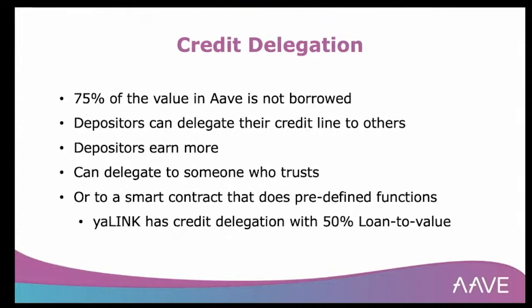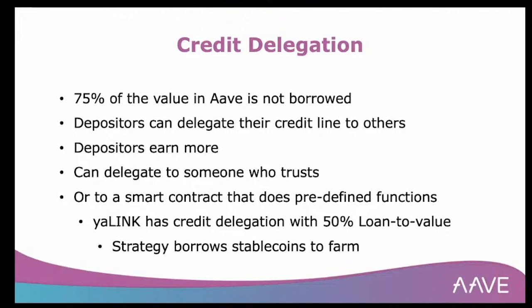In terms of smart contract-based credit delegation, where a smart contract is the borrower, we have one example: the YA LINK vault in Yearn. There is credit delegation with a 50% loan-to-value ratio at the moment. The strategy borrows stablecoins to yield farm and generate profits for the credit delegators. Currently, there is roughly 20 million worth of USDC utilized with credit delegation, which is quite fascinating.